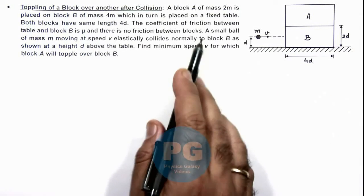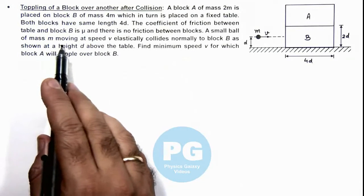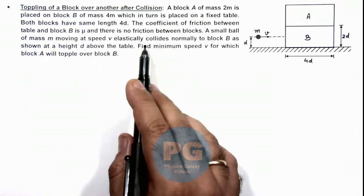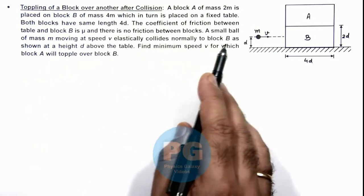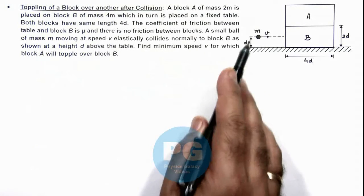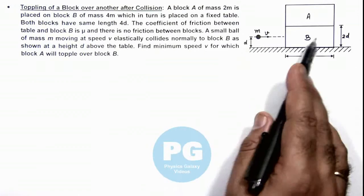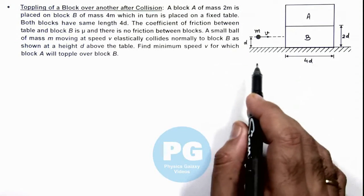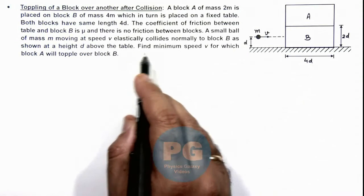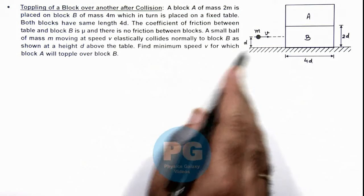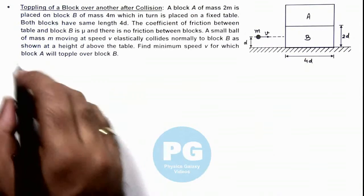And here it is saying a small ball of mass m moving at speed v elastically collides normally to block B as we can see here at a height d that is in the line of center of mass of B. We are required to find a minimum speed v for which block A will topple over block B.